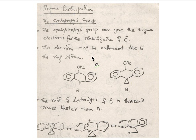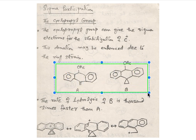As you know, the cyclopropyl group can give the sigma electrons for the stability of carbocation. The donation may be enhanced due to the ring strain. We have two structures of dihydroanthracene here.